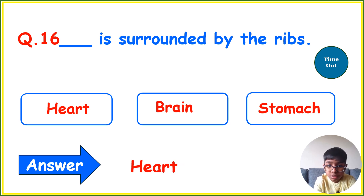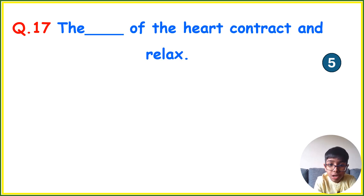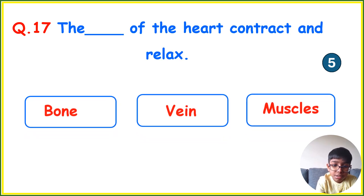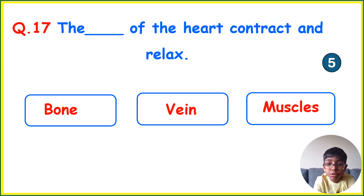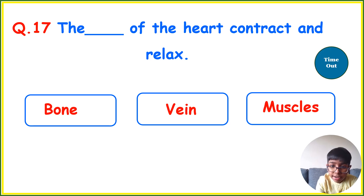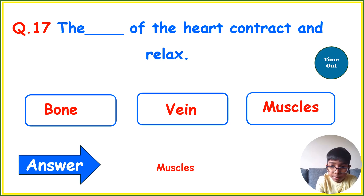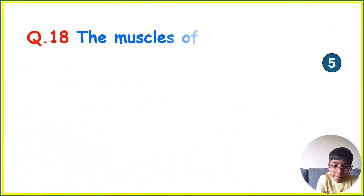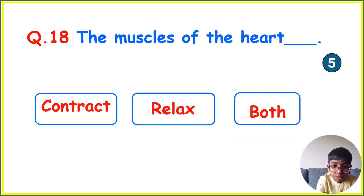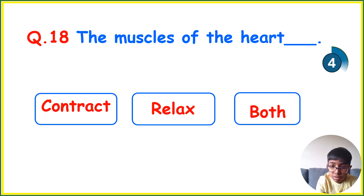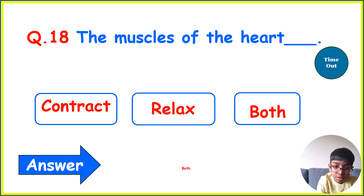Your next question is: The dash of the heart contracts and relaxes. Options: Bone, Spine, or Muscle? Your time starts now. Your correct answer is Muscles. The muscles connect joints such as ankle to knee, knee, etc. Your correct answer is Both.